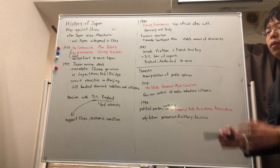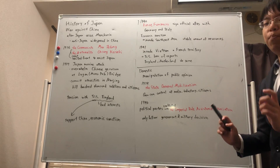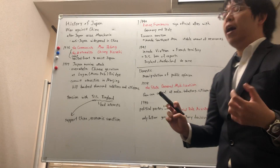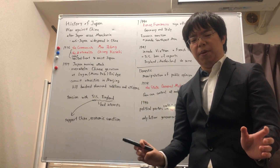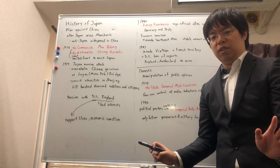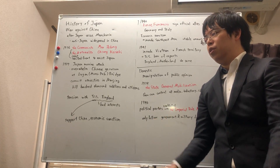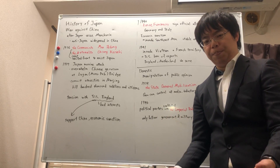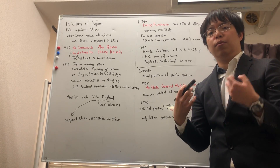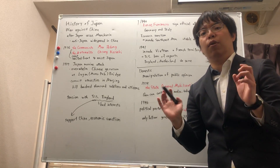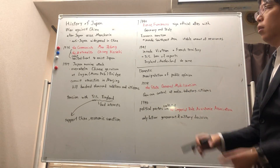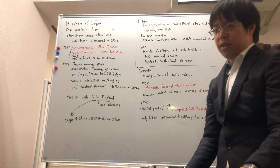In 1940, Prime Minister Konoe Fumimaro signed an official alliance with Germany and Italy. Due to the economic sanctions from the US and England, Japan needed to secure a stable supply of resources such as oil.